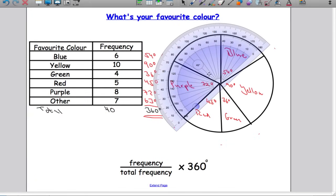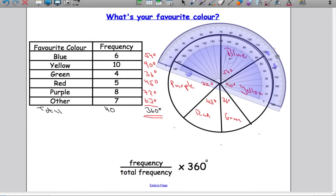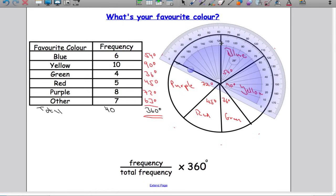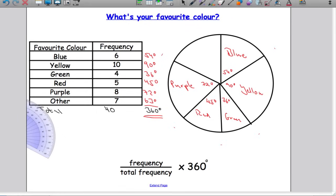Final one: 63 degrees. Let's just check we're right. This should be 63 degrees or thereabouts. Yeah, about 63 degrees, so that's absolutely spot on. 63 degrees and other. And that is how you draw a pie chart.